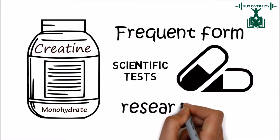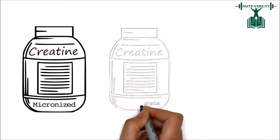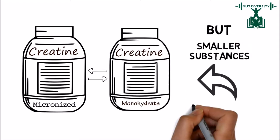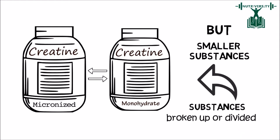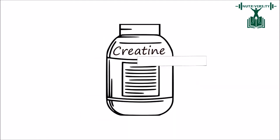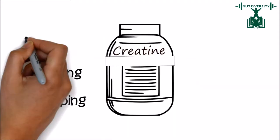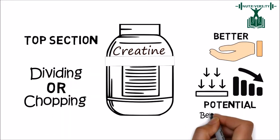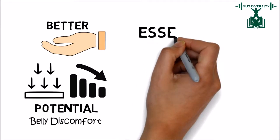Creatine monohydrate is the most frequent form of the supplement, the main one most scientific tests and research use. Micronized creatine is actually creatine monohydrate, but with much smaller substances. This creatine has been micronized, meaning its substances have been broken up or divided. This dividing or chopping reduced the top section of the creatine, rendering it better to absorb and lessening any potential belly discomfort.